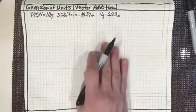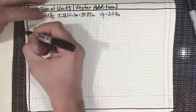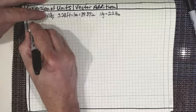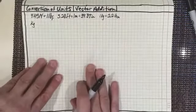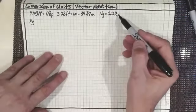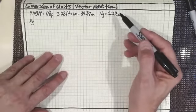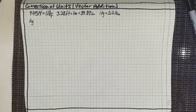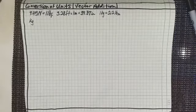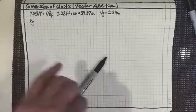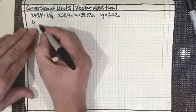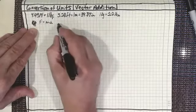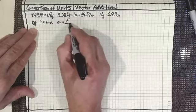How do we really get a slug? We know that a kilogram is going to be 2.2 pounds mass at the surface of the Earth. If we look at the force equation — force equals mass times acceleration — then mass equals force divided by acceleration.